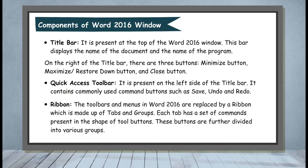Ribbon. The toolbars and menus in Word 2016 are replaced by a ribbon, which is made up of tabs and groups. Each tab has a set of commands present in the shape of tool buttons. These buttons are further divided into various groups.